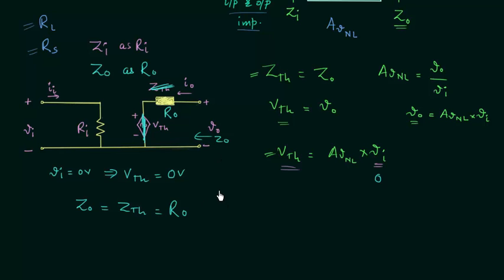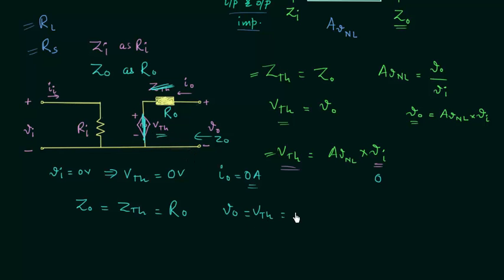To find the output voltage VO under no-load conditions, the load current IO equals 0A since there is no load connected. When IO equals 0A, the voltage VO is simply equal to VTH, which equals AVNL multiplied by VI. So we have everything in this circuit — instead of impedance we have resistance RO.